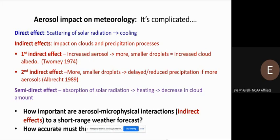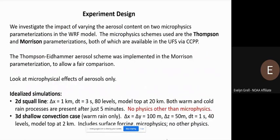Because aerosol content is not always very well known, we're trying to get an idea of how accurate the aerosol content needs to be in the forecast model. We looked at the impact of including aerosols and varying aerosol content on two different microphysics parameterizations using the WARF model: the Thompson and Morrison microphysics schemes. Both schemes are available in the CCPP and can be used in the UFS, and the Thompson scheme is one of the candidates for further development for possible operational use.